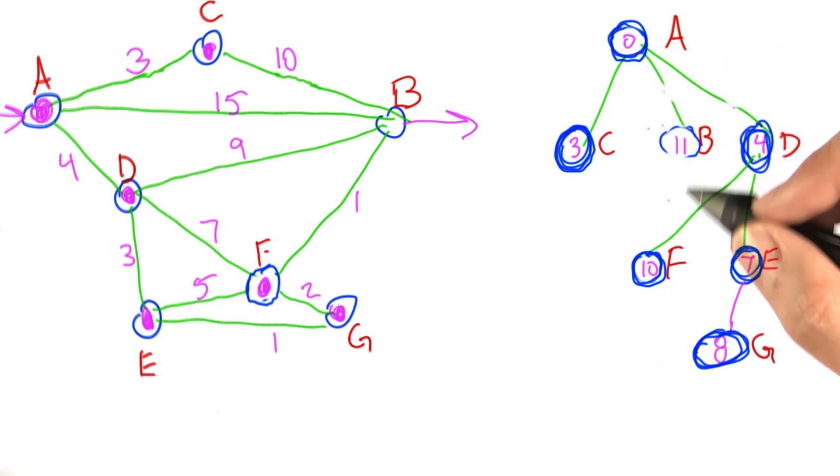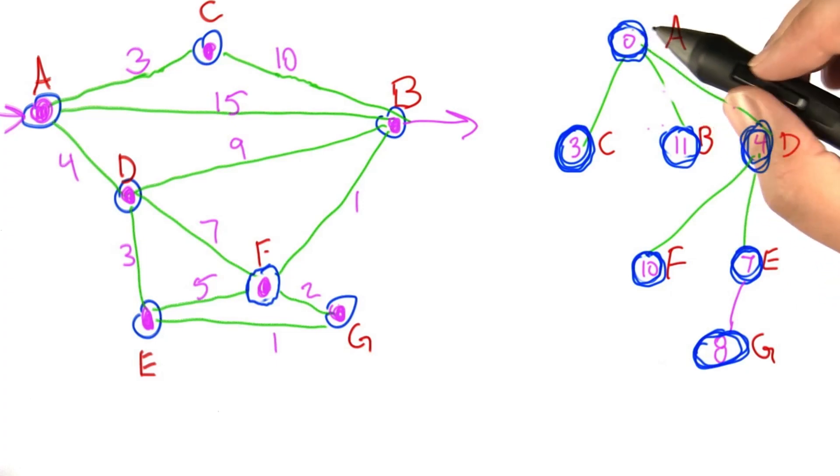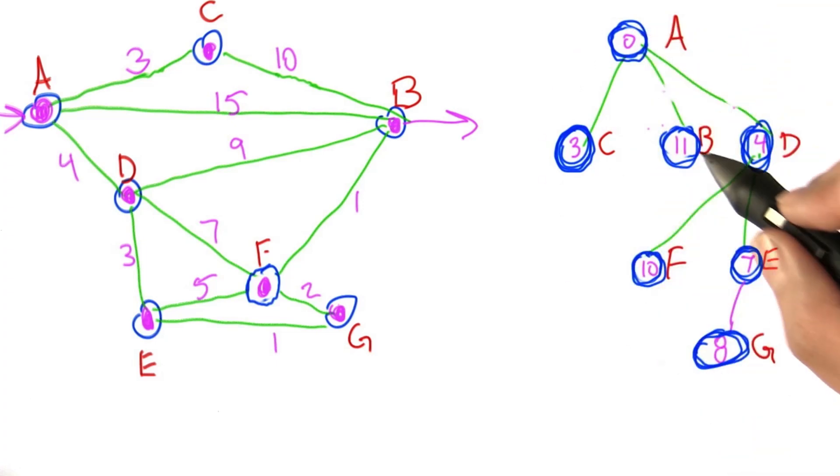Now the only node that we've got left to think about is B. There is no way to get to B any faster than 11 because there's no other place that we can go and then get to B. So we can lock it down, and that finishes the picture. We now know what the shortest distance is from A to every other node in the graph. The distance to B is 11. Now we've kind of lost a little bit of the information of how we get to B in 11, but we'll deal with that in a little bit.